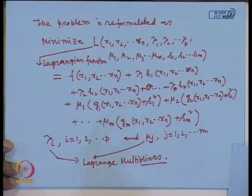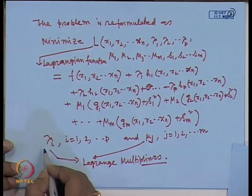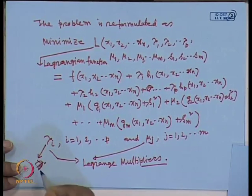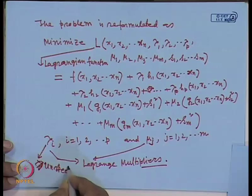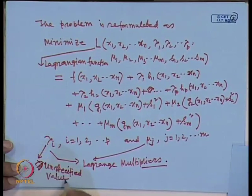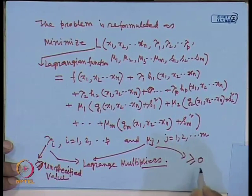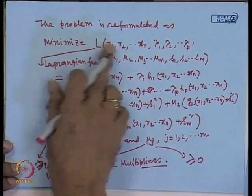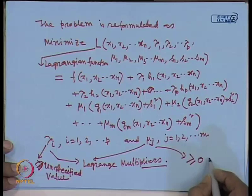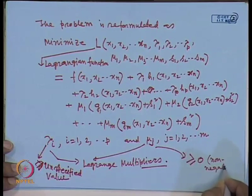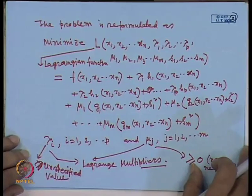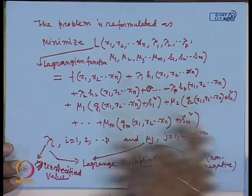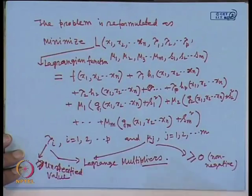The λᵢ values are unspecified — they may be positive, negative, or zero. The μⱼ values are always greater than or equal to zero when minimizing the function L. I will explain later why μⱼ is non-negative, while λᵢ is unspecified. This completes the constrained optimization problem converted into an unconstrained optimization problem.